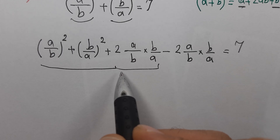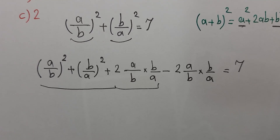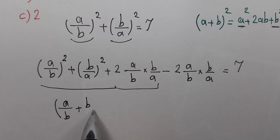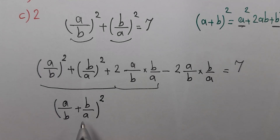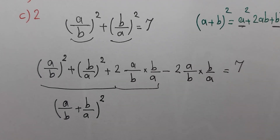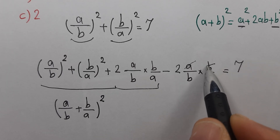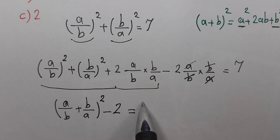This matches our identity, so we can write (a/b + b/a)² instead. According to the identity, we cancel out the 2·(a/b)·(b/a) terms, leaving minus 2, and we have equals 7.